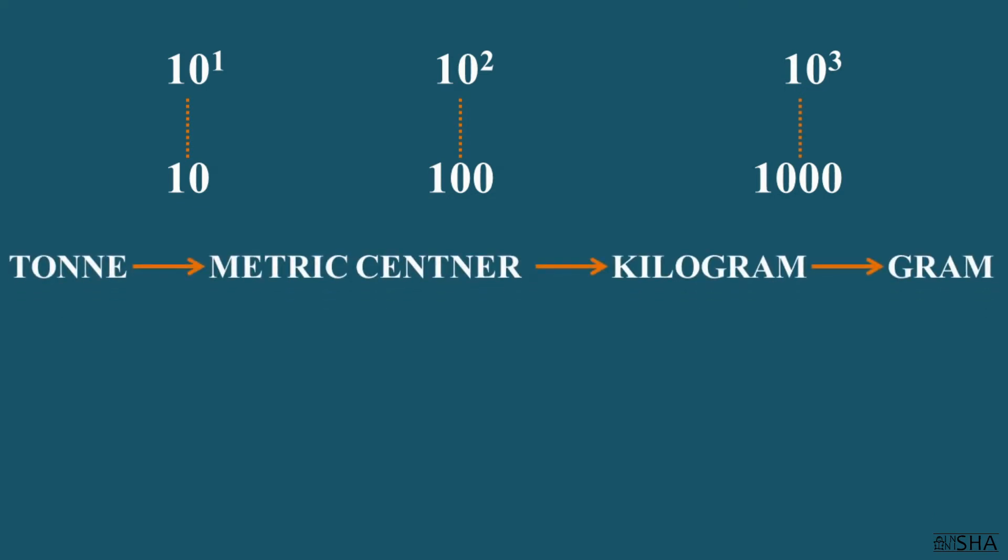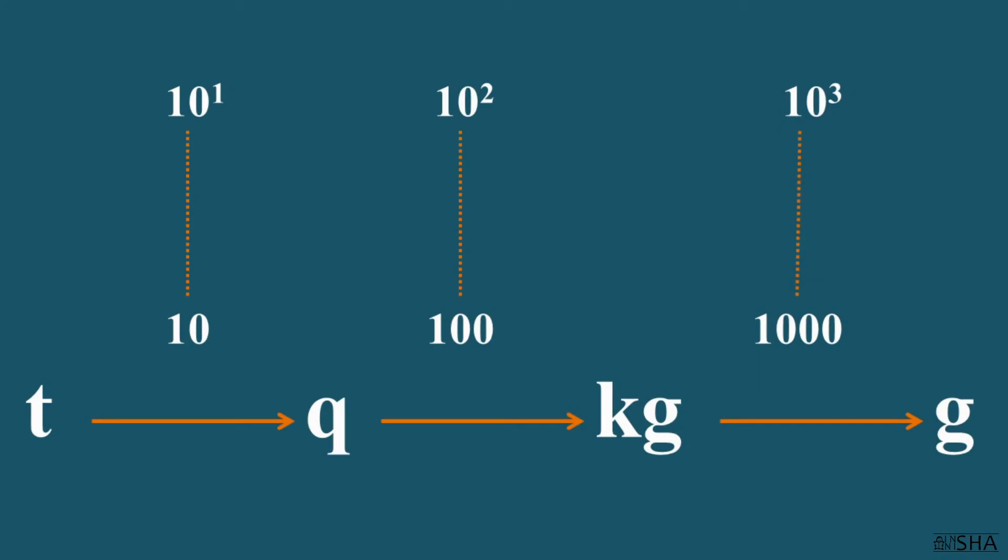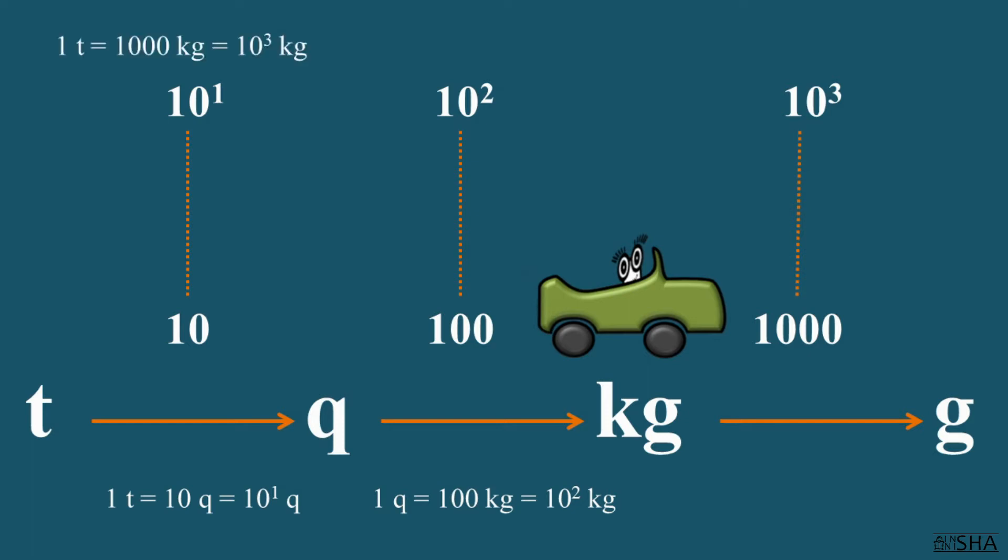Take a look at how easily you can use this chain. There are ten metric centenars in one ton. One hundred, or ten to the second power, kilograms in one metric centenar. From a ton to a kilogram, we meet factors ten and one hundred, which is a thousand. So, one ton is equal to one thousand, or ten to the third power kilograms.